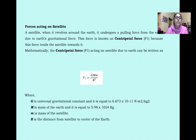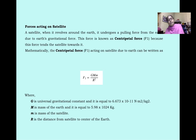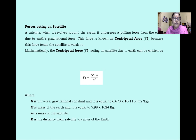Equation of Orbit — Forces acting on satellite: When a satellite revolves around the earth it undergoes a pulling force due to the earth's gravitational force, known as centripetal force F1. Mathematically, F1 = GM·m / r², where G is the universal gravitational constant equal to 6.673 × 10⁻¹¹ N·m²/kg², M is the mass of the earth equal to 5.98 × 10²⁴ kg, m is the mass of the satellite, and r is the distance from the satellite to the center of the earth.